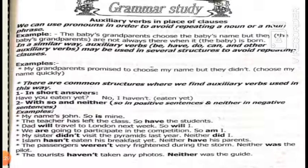There are common structures where auxiliary verbs are used this way, like in short answers. For example, 'have you eaten yet? No, I haven't' — meaning I haven't eaten yet. Also with 'so' and 'neither': 'so' is used in positive sentences and 'neither' in negative sentences. For example, 'My name is John. So is mine' — a positive sentence.